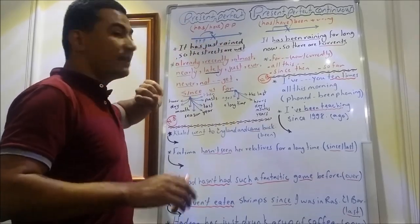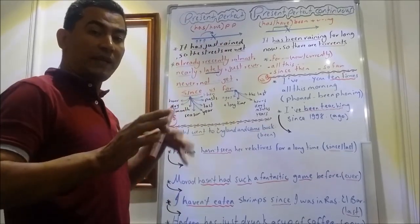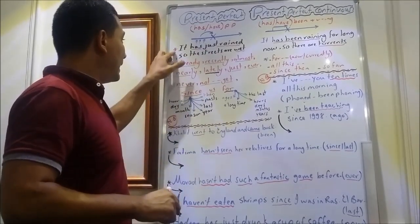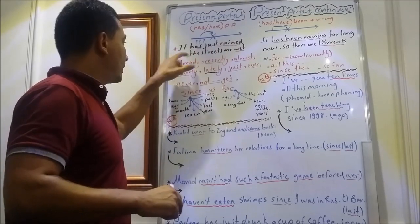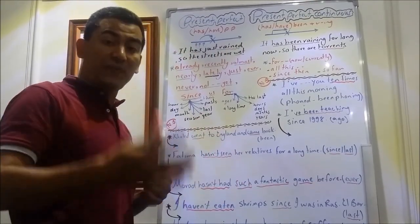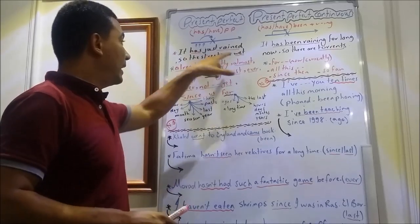An action that happened in the past at no specific time but has an effect at present. If we have this example, it has just rained, so the streets are wet. We haven't seen the rain but we have seen the effect on the ground, like the street.